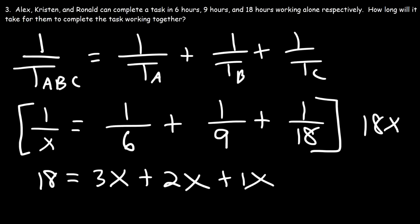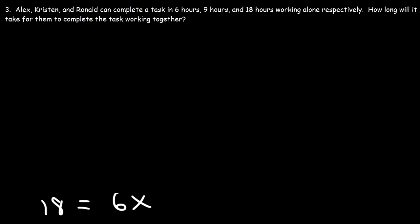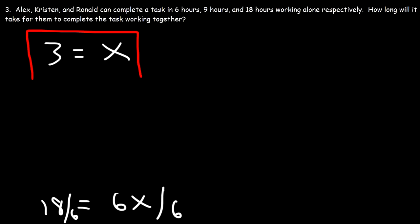So we have 18 equals 6X. Dividing both sides by 6, X equals 3. It will take all three of them 3 hours to complete the task working together. As you can see, it's not that bad.